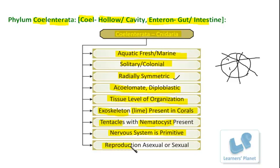These organisms show reproduction. They reproduce generally by the asexual mode of reproduction, which is usually either fragmentation or budding. Commonly, hydra and corals reproduce by the budding process or by fragmentation. In the case of hydra, they are able to show regeneration as they have a little more complexity compared to other lower organisms. In some organisms, sexual reproduction is also observed.